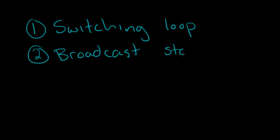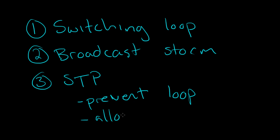And in order to prevent switching loops and broadcast storms, we run Spanning Tree Protocol, or STP, on switches that will prevent loops while allowing for redundancy, so that in case of something like a cable failure, we can still have backup links.